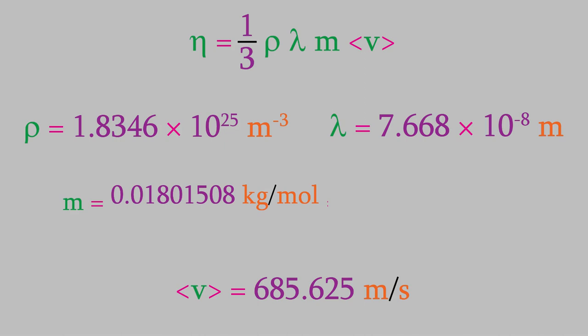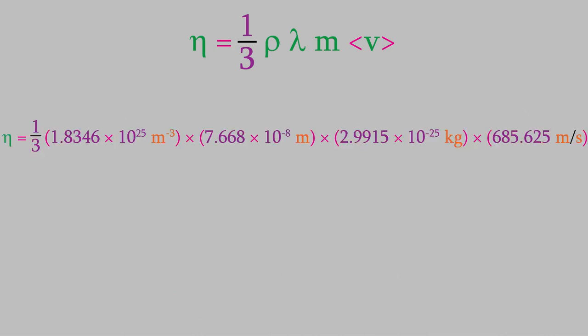Notice that the mass we want here is the mass of one molecule, not the mass per mole. Therefore, we need to divide the molecular mass that we already calculated by Avogadro's number to get the mass of a molecule. Now, when we plug in these numbers into our viscosity equation, it turns out to be 9.618 times 10 to the minus 6 kilograms over meters times seconds.